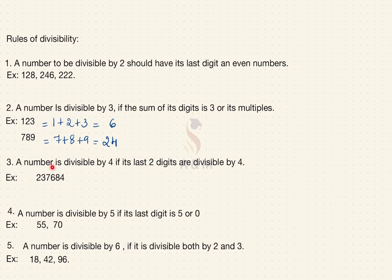Third rule: a number is divisible by 4 if its last two digits are divisible by 4. For a 6-digit number, check the last two digits — 84. Yes, 84 is divisible by 4, so the entire 6-digit number is divisible by 4. Fourth rule: a number is divisible by 5 if its last digit is 5 or 0. Examples: 55 and 70, where the last digits are 5 and 0, so both are divisible by 5. Fifth rule: a number is divisible by 6 if it is divisible by both 2 and 3. Examples: 18 and 42 — both divisible by 2 and 3, so both are divisible by 6.